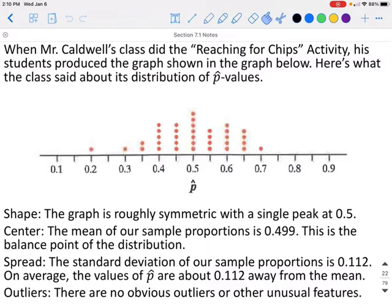The graph is roughly symmetric with a single peak at 0.5. The center, the mean of the sample proportion, is 0.499. This is the balancing point of the distribution.